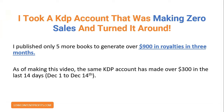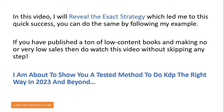I took a KDP account that was making zero sales and turned it around. I published only 5 more books to generate over $900 in royalties in 3 months. As of making this video, the same KDP account has made over $300 in the last 14 days — that is December 1st to December 14th. In this video, I will reveal the exact strategy which led me to this quick success.